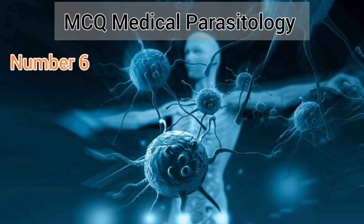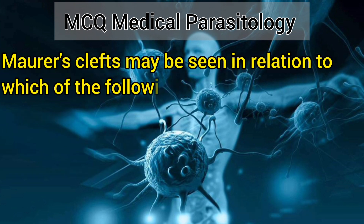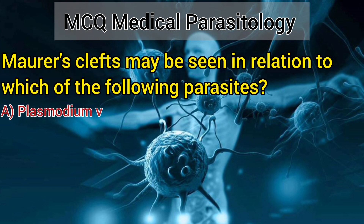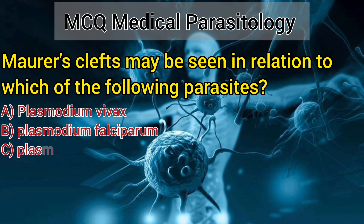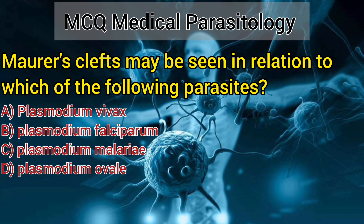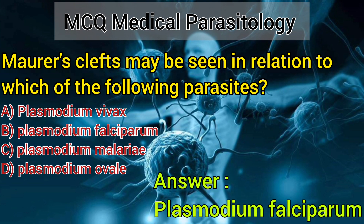Number 6. Maurer's clefts may be seen in relation to which of the following parasites? A. Plasmodium vivax. B. Plasmodium falciparum. C. Plasmodium malariae. D. Plasmodium ovale. Answer: Plasmodium falciparum.